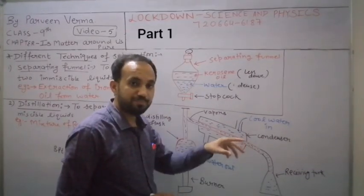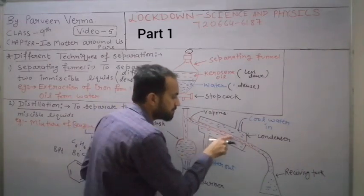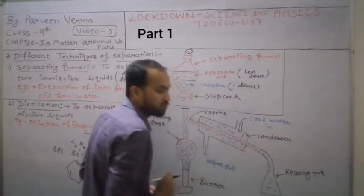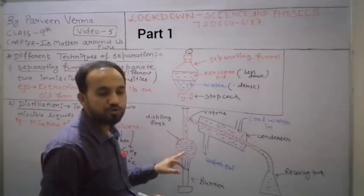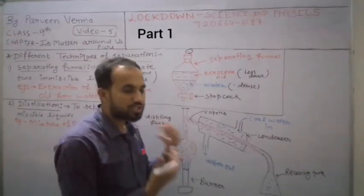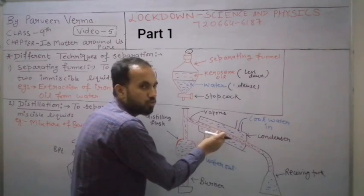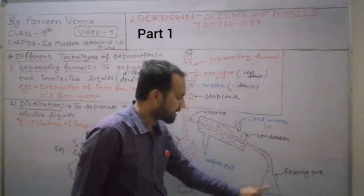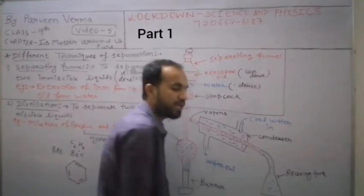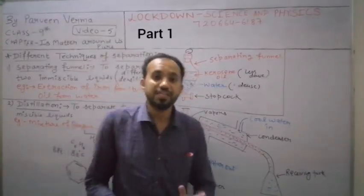The vapor is cooled and condensed back to liquid form, which we collect in a flask. Initially, we have benzene and toluene mixed together. After some time, when we heat the mixture, vapors form. We add cool water to the condenser to cool and condense the vapors, then collect the liquid. This way benzene is collected here and toluene remains there.